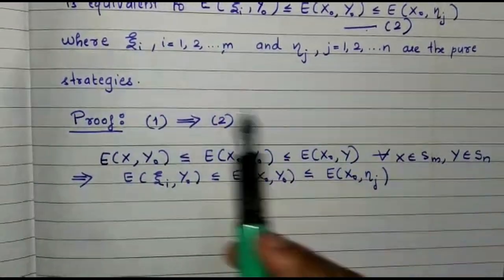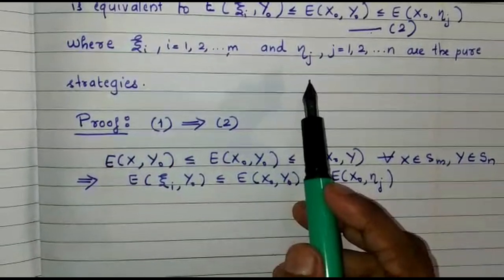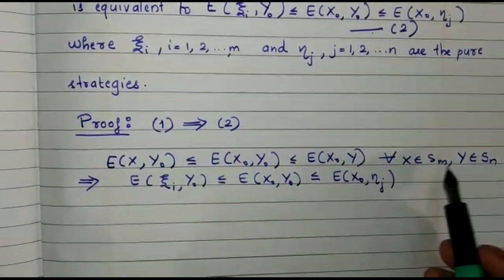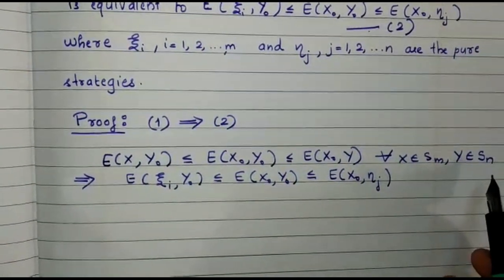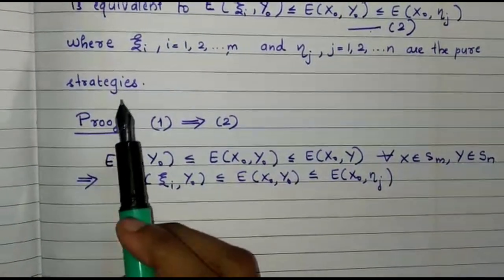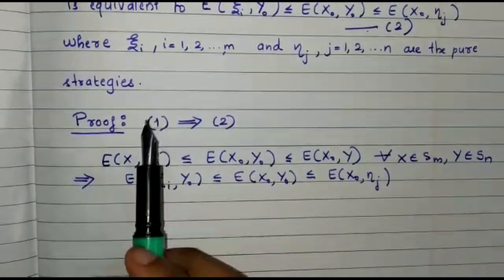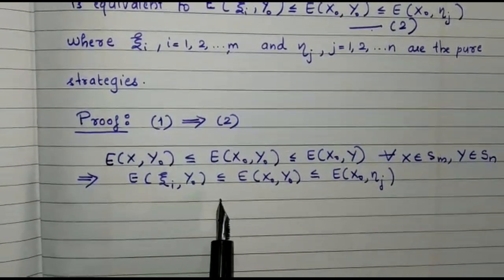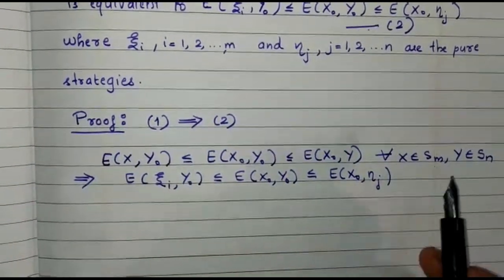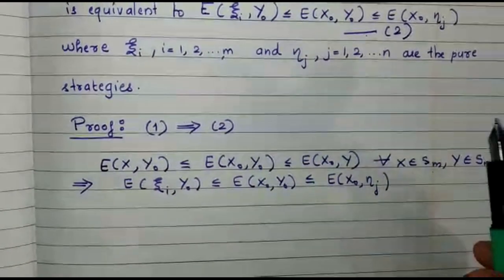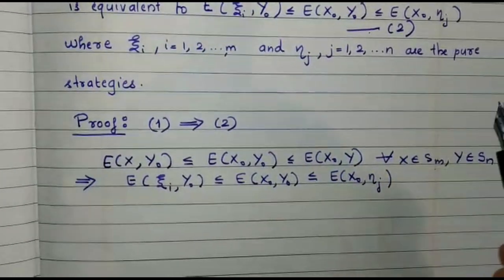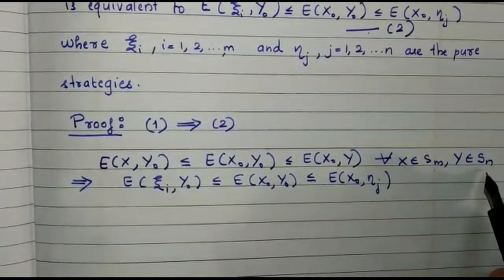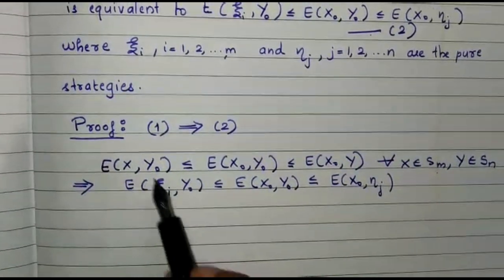We know that ψi and ηj are pure strategies and they belong to Sm and Sn respectively. Because ψi is the ordered m-tuple of non-negative numbers whose sum is unity, so it belongs to Sm. And ηj is the ordered n-tuple of non-negative numbers whose sum is unity, so it belongs to Sn. So condition 1 implies condition 2.